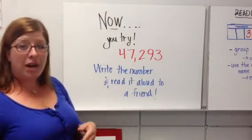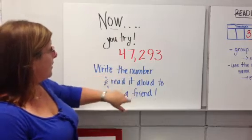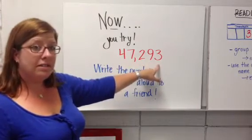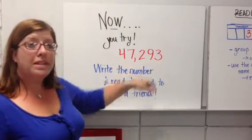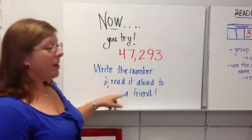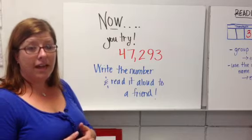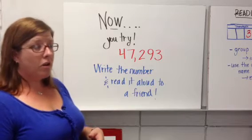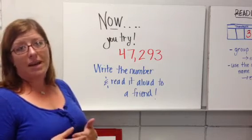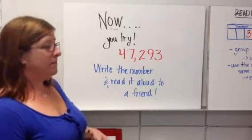Now we're going to try this at our seats. Let's look at this number — you have a five-digit number here. You can use your place value mat if you'd like. We're going to write the number and then you're going to read it aloud to a friend. Go ahead, start writing your number down with your dry erase marker and your place value mat, and we'll go over it as you talk to a friend.